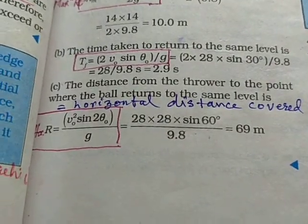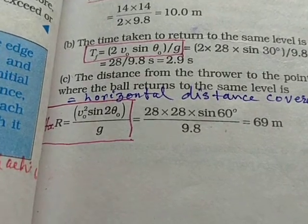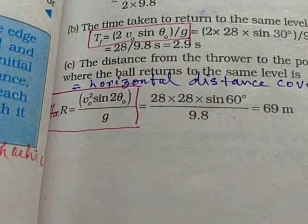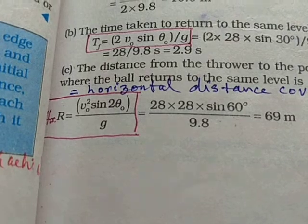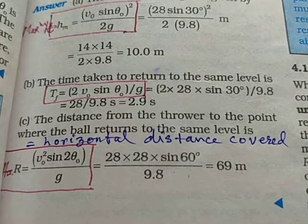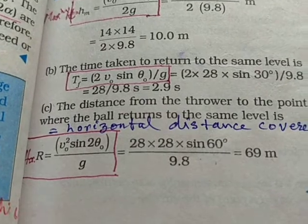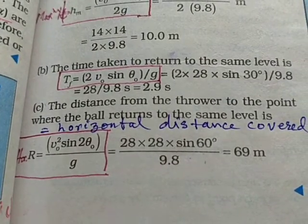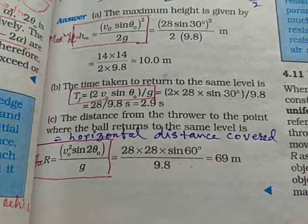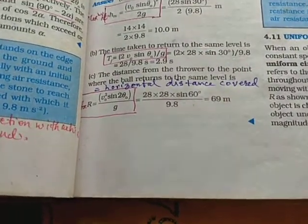Now in this time duration, the horizontal distance covered will be given by the relation we have already derived for horizontal range, that is V² sin 2θ by g. So here V₀ is 28 meters per second as given. So that means 28 into 28 into sin 2 into 30 degree, that becomes sin 60 degree, whole divided by g value that is 9.8, and that becomes 69 meters. So that means the ball will cover a distance of 69 meters horizontally.